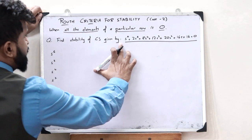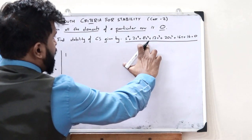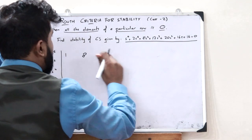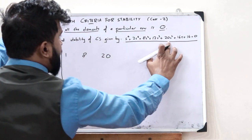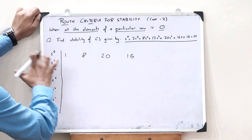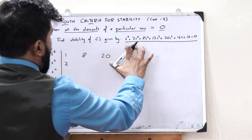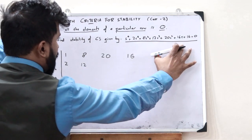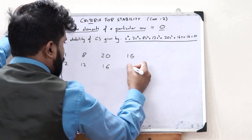The coefficient of s⁶ is 1, then taking alternative terms we have 8, 20, and 16. The coefficient of s⁵ is 2, then the alternative terms give 12 and 16. Since there is no further alternative term, we take it as 0.